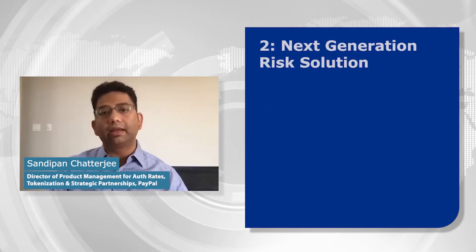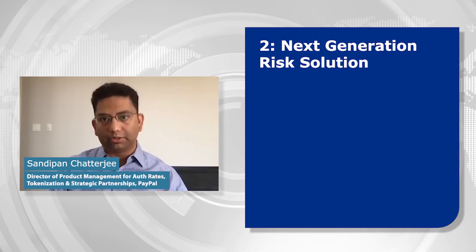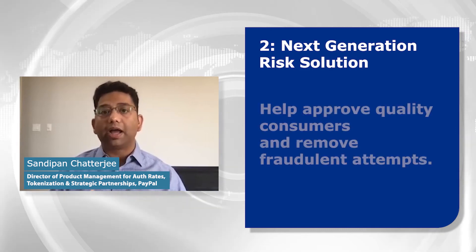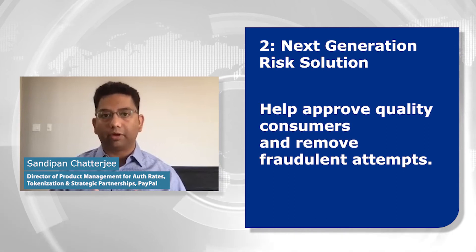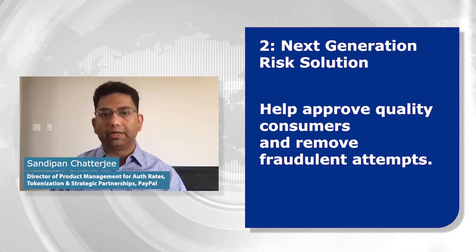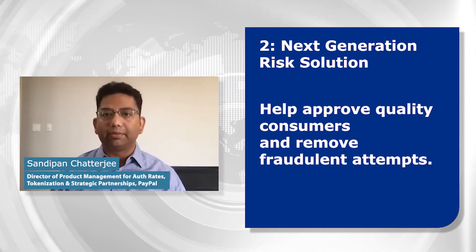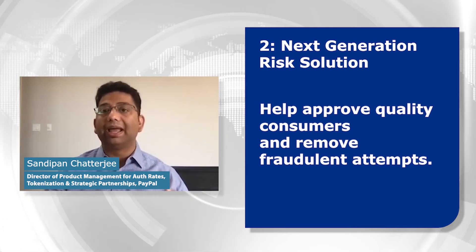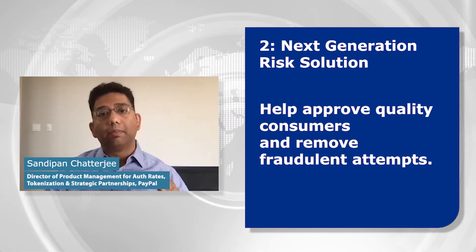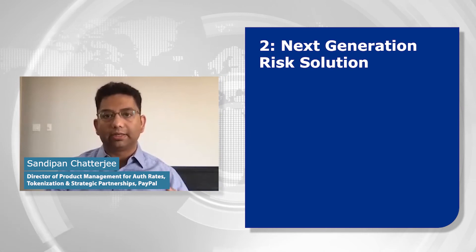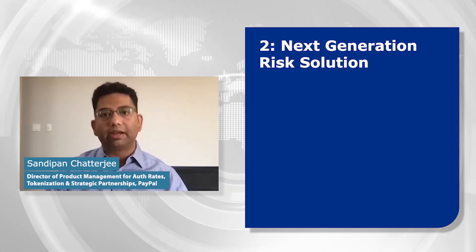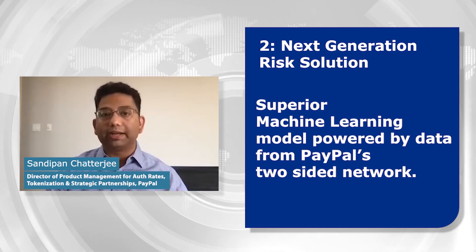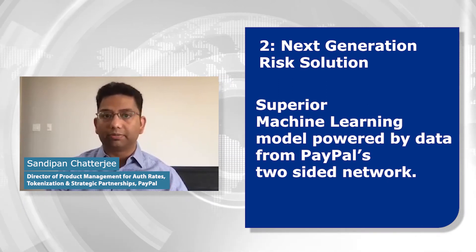The second is our next-generation risk solution. Our risk algorithms help improve high-quality consumers while blocking out fraudsters. We use machine learning, artificial intelligence, and real-time decisioning to more accurately differentiate between good and bad transactions. But machine learning is only as good as the data set it is learning from, and that is where we have a strong advantage due to our data from our two-sided networks on consumer and merchant profiles.